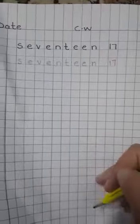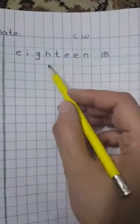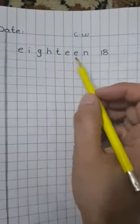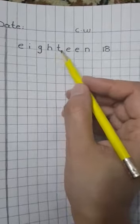And this is our spelling of 18: E-I-G-H-T double E-N, 18.